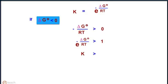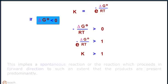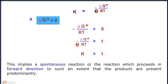It further implies that K is greater than 1. This implies a spontaneous reaction or a reaction which proceeds in the forward direction to such an extent that the products are present predominantly.